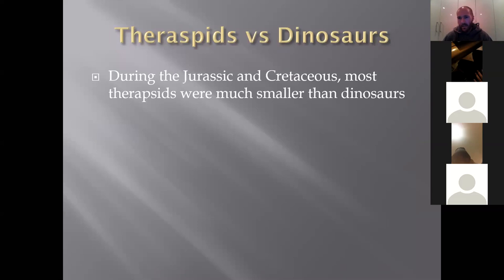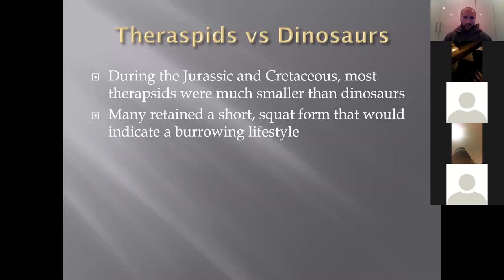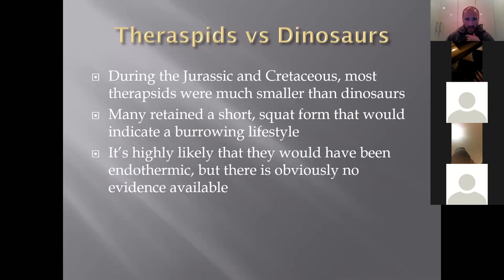The therapsids had a hard time when the dinosaurs came into power during the Triassic and Cretaceous. The therapsids gradually evolved to smaller and smaller forms — not by choice, but through natural selection. Bigger therapsids got eaten by bigger dinosaurs; smaller ones survived, running away into holes. Many retained a short squat form indicating a burrowing lifestyle, similar to dassies, voles, moles and rodents. It's highly likely they would have been endothermic, based on the physical evidence from the shape of body and cranium.